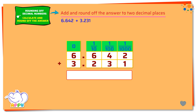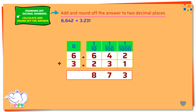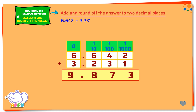We add the thousandths. We get three thousandths. Now we add the hundredths. We get seven hundredths. Next, we add the tenths. We get eight tenths. We place the decimal point. Then we add the ones. We get nine ones. We get 9.873.